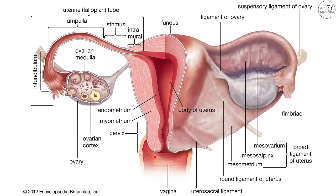Now let's look at the anatomy of the female reproductive system. Here is the uterus, the fallopian tubes, and the ovaries. The uterus goes down to meet the vagina, and where they meet — the lower end of the uterus — is the cervix. This is where cervical cancer occurs.